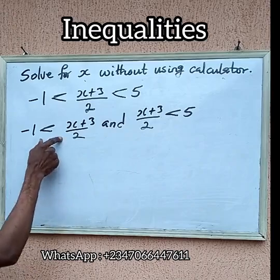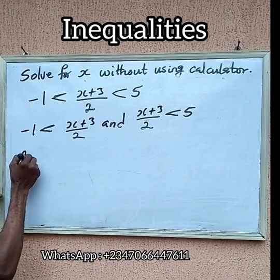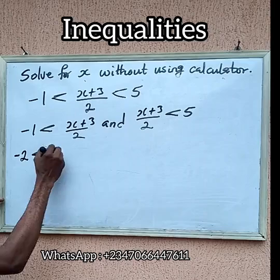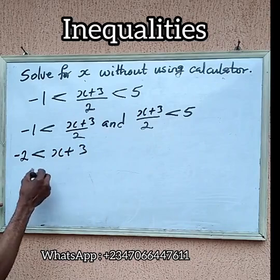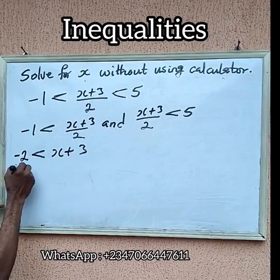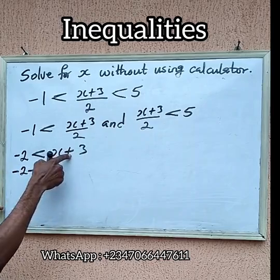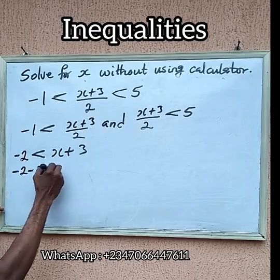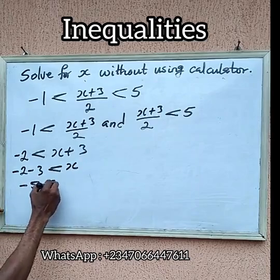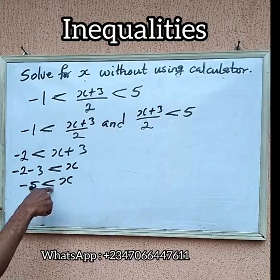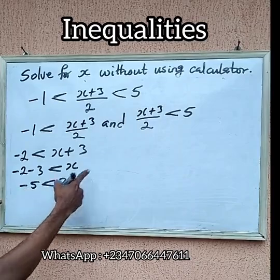Now let us cross multiply. If we cross multiply here we are going to be having -2 less than x+3. So we want to get x here. Now transfer this one to this side, we have -2 minus 3, because this one will move and the sign here is positive. If we change to negative sign, then less than x. So at this point now we have -5. That means x is greater than -5, or -5 less than x.